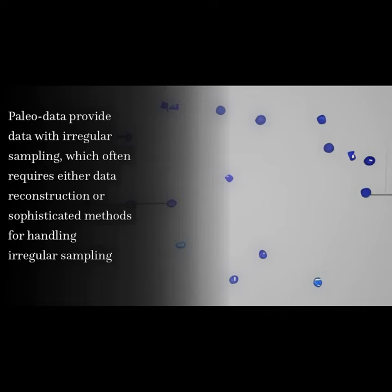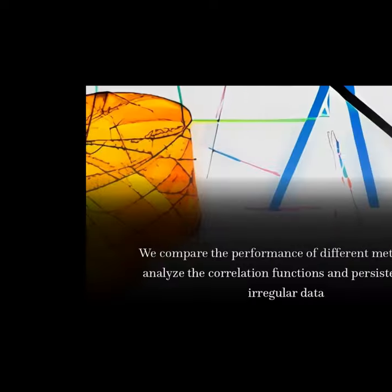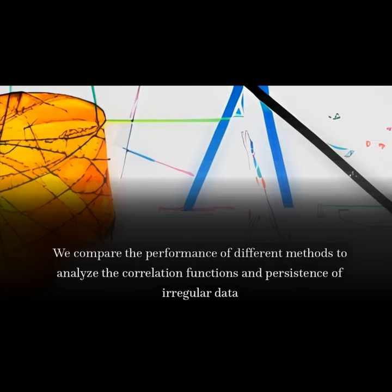PaleoData provide data with irregular sampling, which often requires either data reconstruction or sophisticated methods for handling irregular sampling. We compare the performance of different methods to analyze the correlation functions and persistence of irregular data.